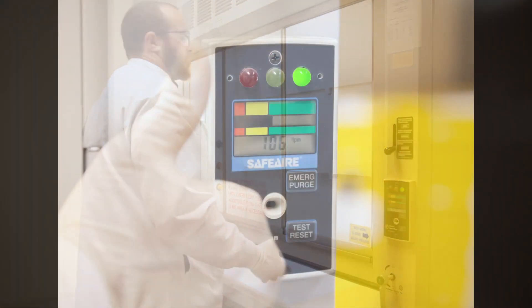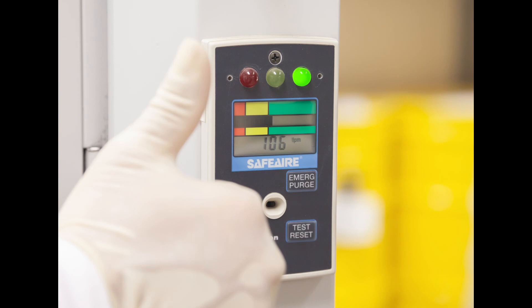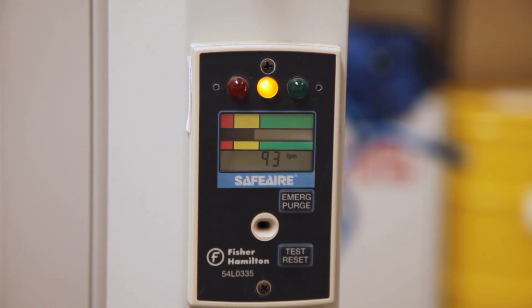Your fume hood should be operating with a face velocity of 100 feet per minute or greater. By regulation, alarms are required to activate once the fume hood falls below 80 fpm. Manually deactivating an alarm is prohibited.